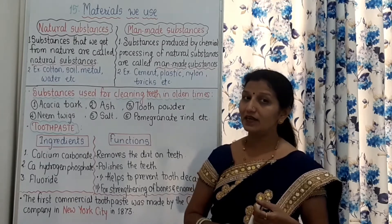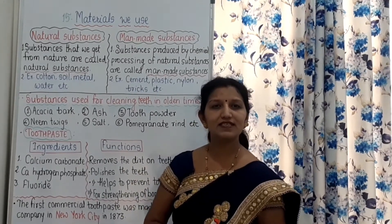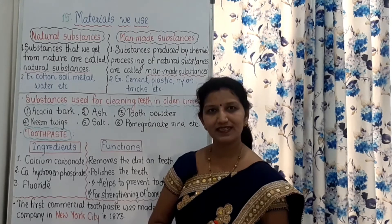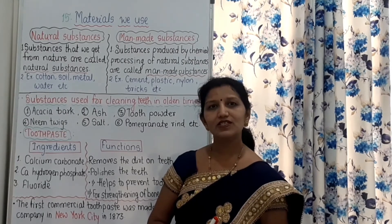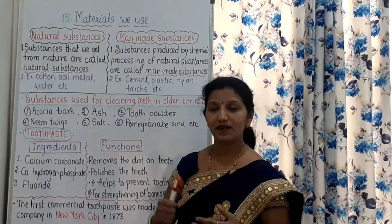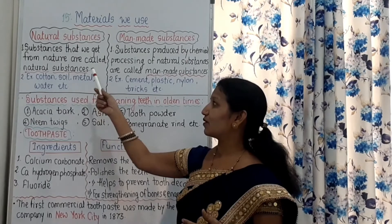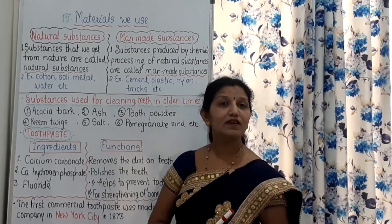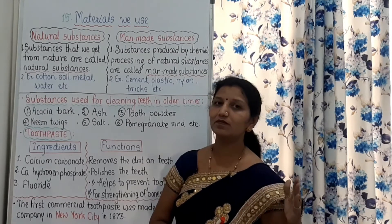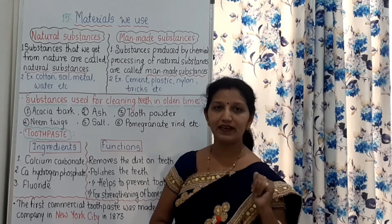Whereas animal-origin substances include wool, leather, and milk. These are the substances that we get from animals. Whereas soil and metals are useful substances obtained from abiotic, that means non-living things — not obtained from plants and animals.